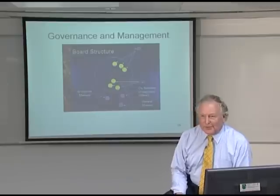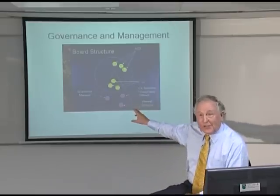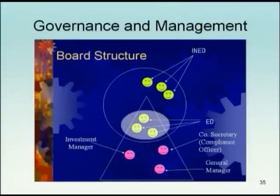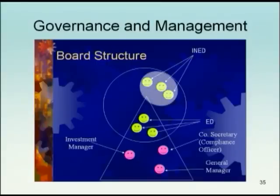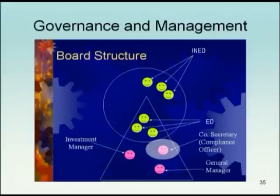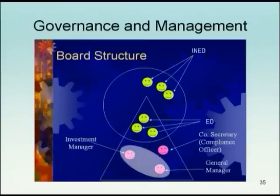Here is a chart created by some of my students, depicting the governance and management structure of a financial institution in Hong Kong. You can produce this chart for any organization with which you are familiar. Notice we have three executive directors — they're in the triangle as managers and in the circle as directors — and three independent non-executive directors. Down in management, there is a company secretary concerned with compliance who attends board meetings, but is not a director, a general manager, and an investment manager. We've separated board from management in our thinking.